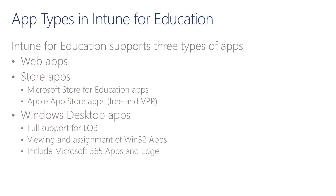Intune for Education supports three types of applications: Web Apps, Store Apps, and Windows Desktop Apps. With Web Apps, we refer to shortcuts to web URLs. These can be published either to Windows devices or to iPads. When we publish a Web App to a Windows device, we create a shortcut to the Start Menu, while on an iPad, we create a new entry in the Home Screen with a specific icon that we can upload during the creation of the app itself.